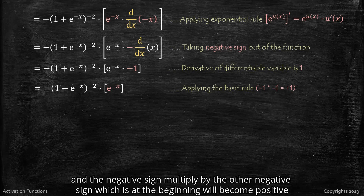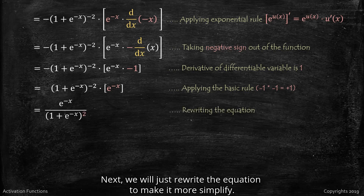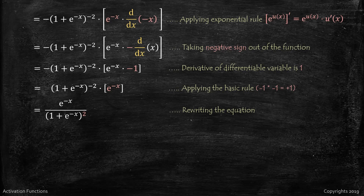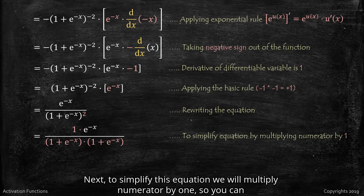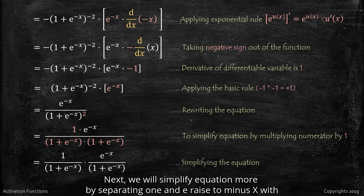The negative sign multiplied by the other negative sign at the beginning becomes positive. Next, we rewrite the equation to make it more simplified, taking 1 plus e raised to minus x raised to minus 2 as a denominator. To further simplify, we multiply the numerator by 1, and expand the denominator as 1 plus e raised to minus x multiplied by 1 plus e raised to minus x.